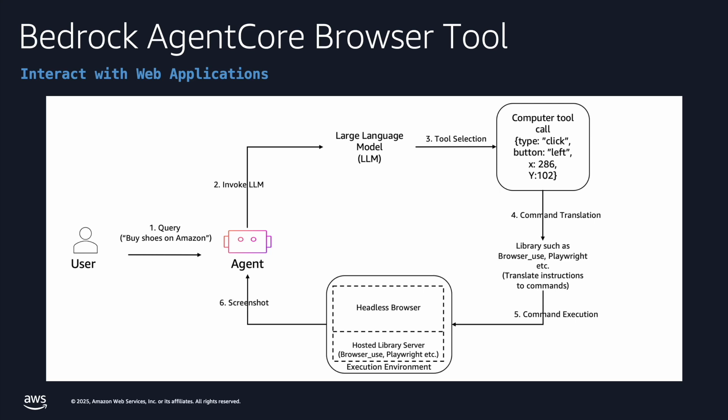The system includes sophisticated computer use capabilities that allow agents to interact with web applications in a way that mimics human behavior while maintaining security and isolation. What makes this powerful is the visual feedback loop. After each action is executed in the browser environment, the system captures a screenshot of the current state and presents it back to the agent.